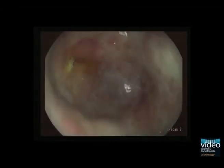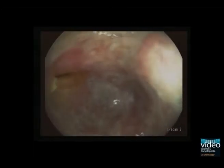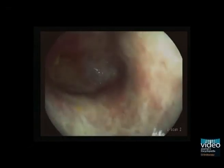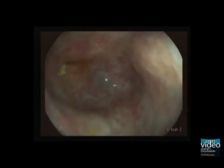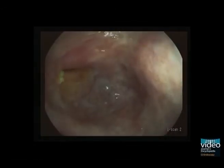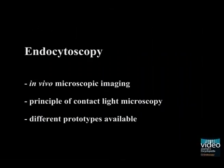Endocytoscopy is a new imaging technique based on the principle of contact light microscopy. Different prototypes of this system are available, including both endoscope-integrated and probe-based systems which can be advanced through the working channel of a standard endoscope. Endocytoscopy enables high magnification imaging of mucosal surface structures at an up to 1400-fold level. Adequate bowel preparation and mucosal preparation is strictly necessary, as endocytoscopy only allows visualization of the very superficial mucosal layer.